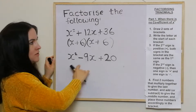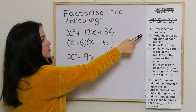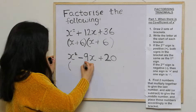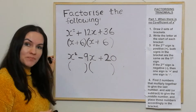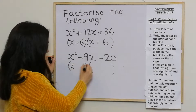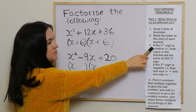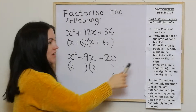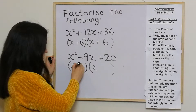Now looking at the second example — again, there's no coefficient of x squared, so we draw two sets of brackets and write x at the start of each bracket. In step three, the second sign is positive, so both signs in the brackets are the same as the first one — so they're both going to be negative.